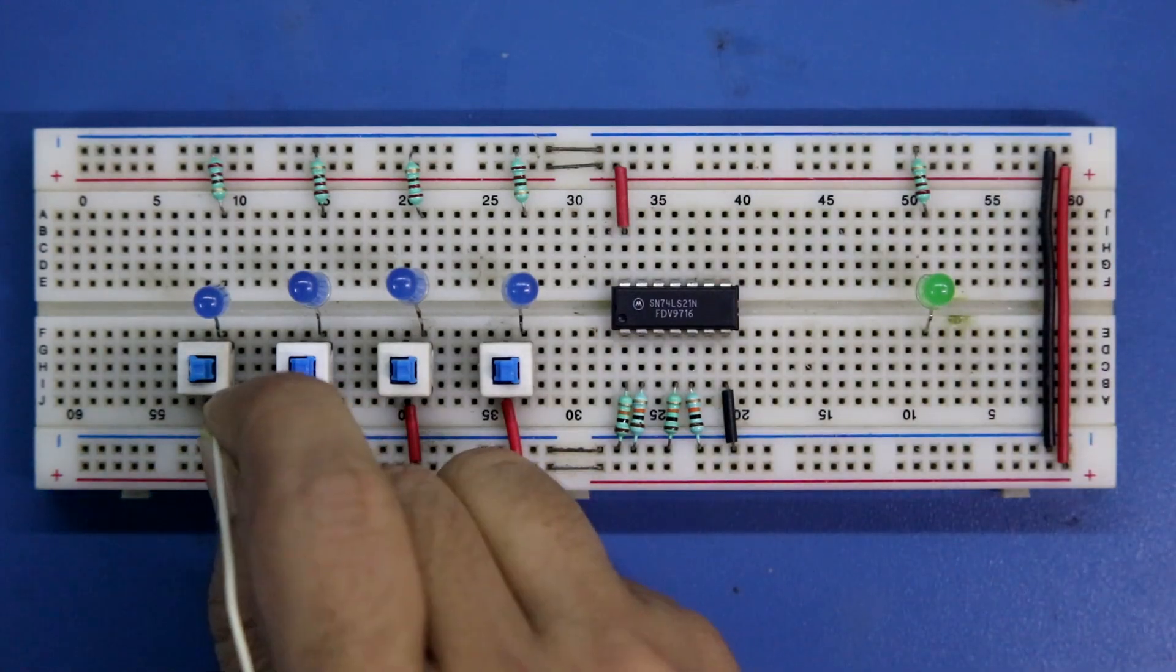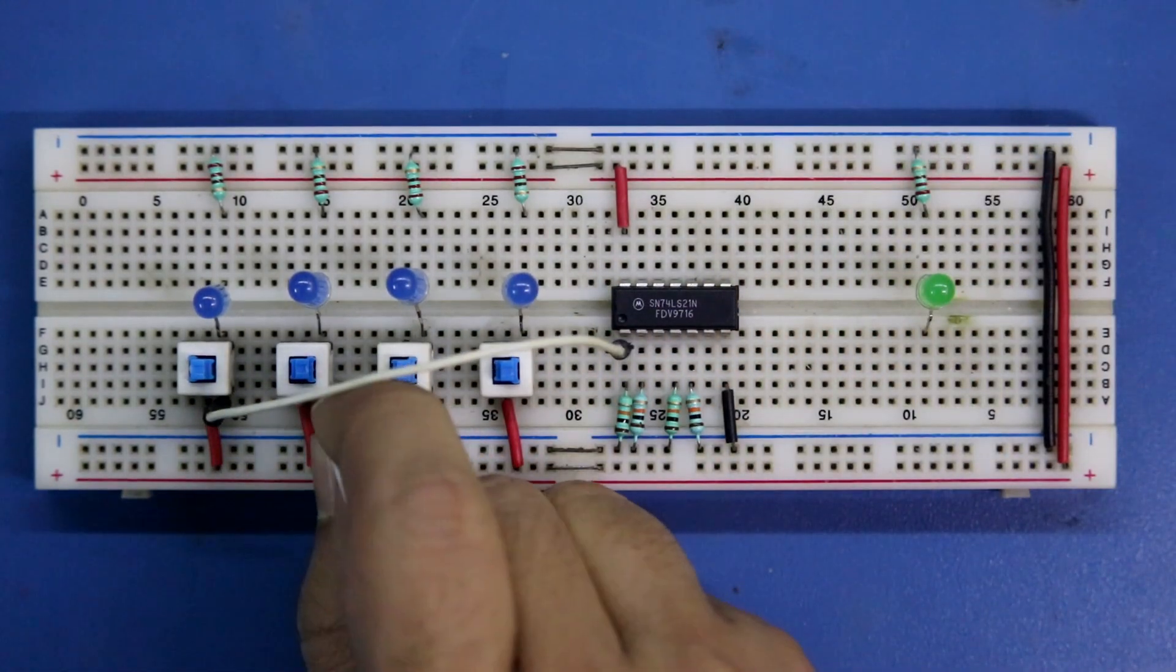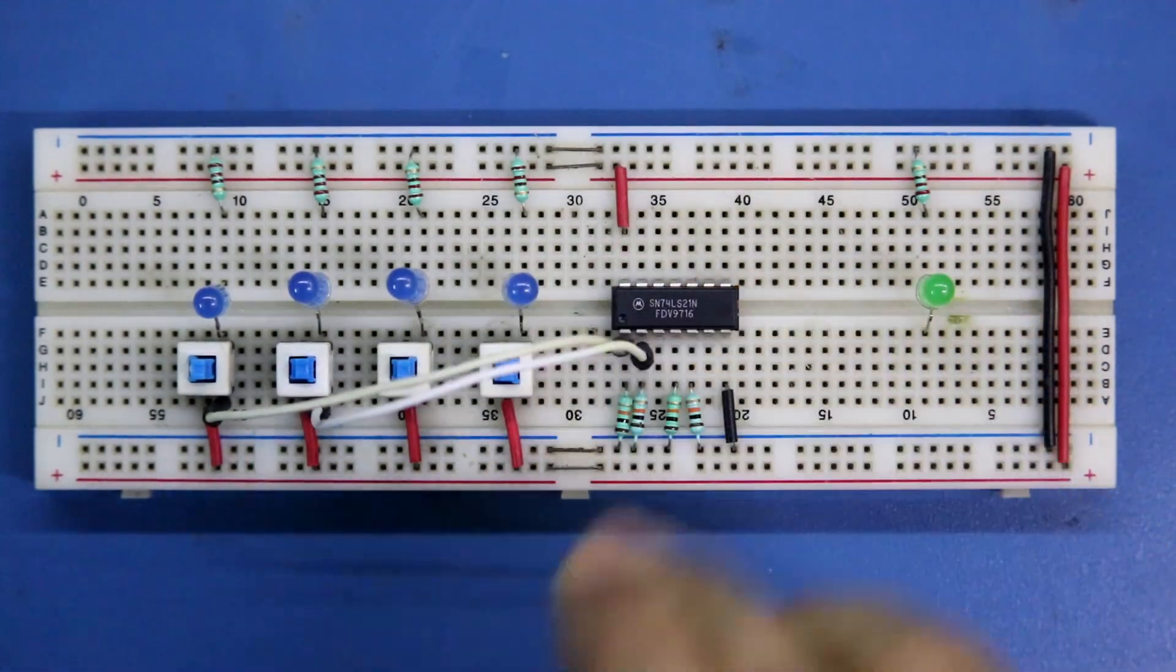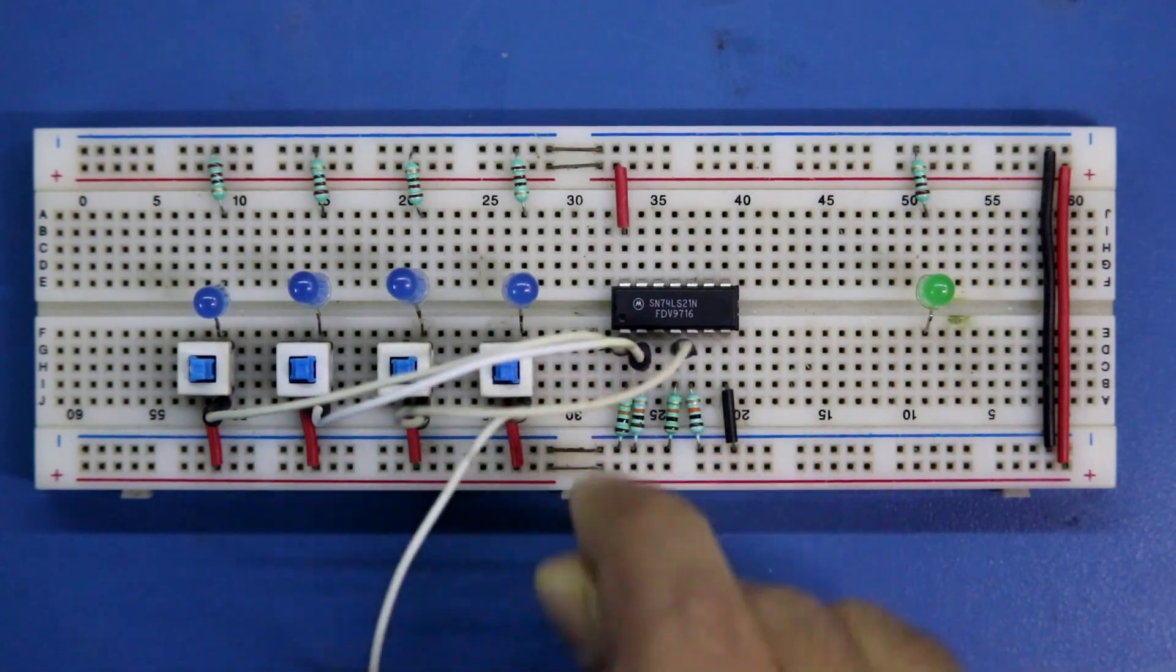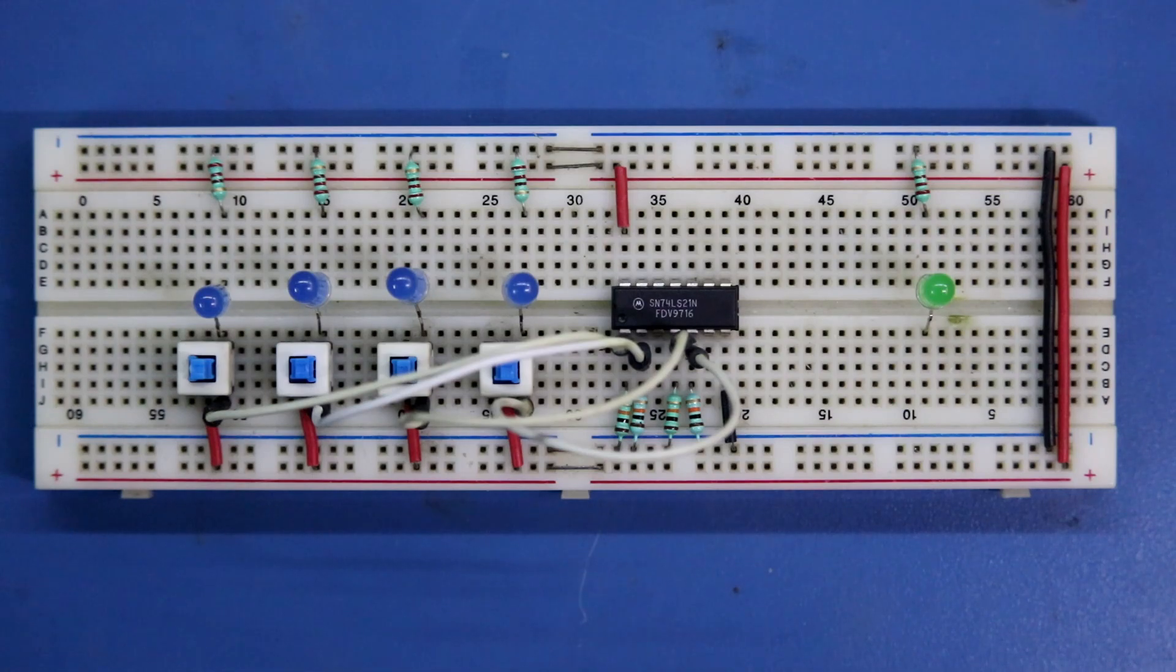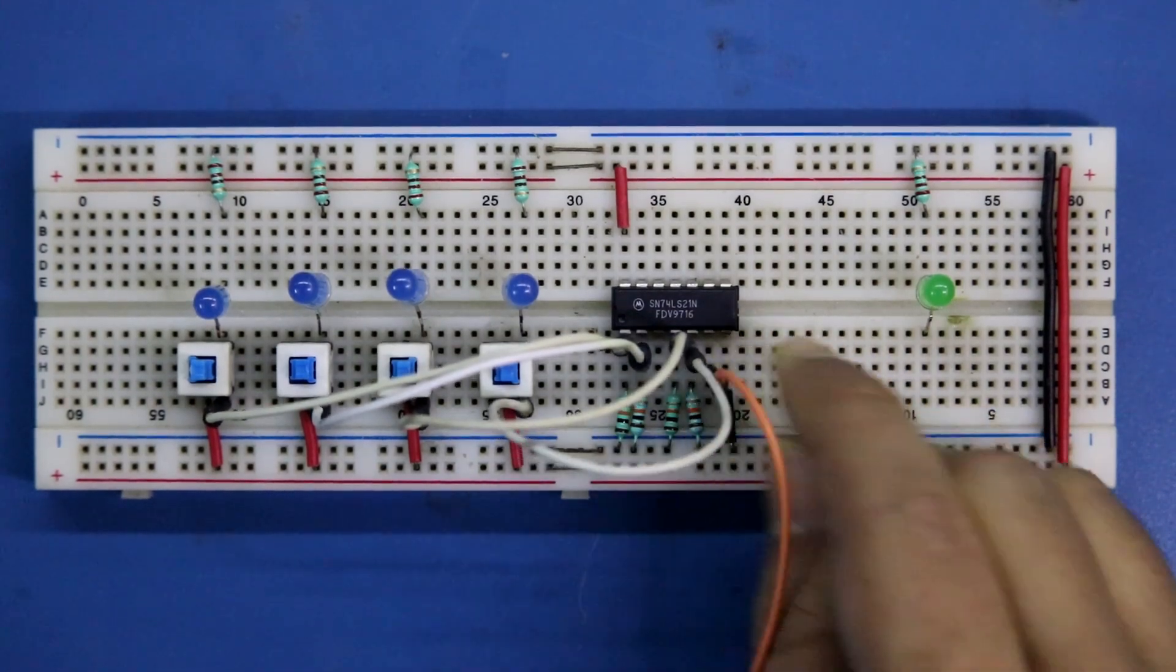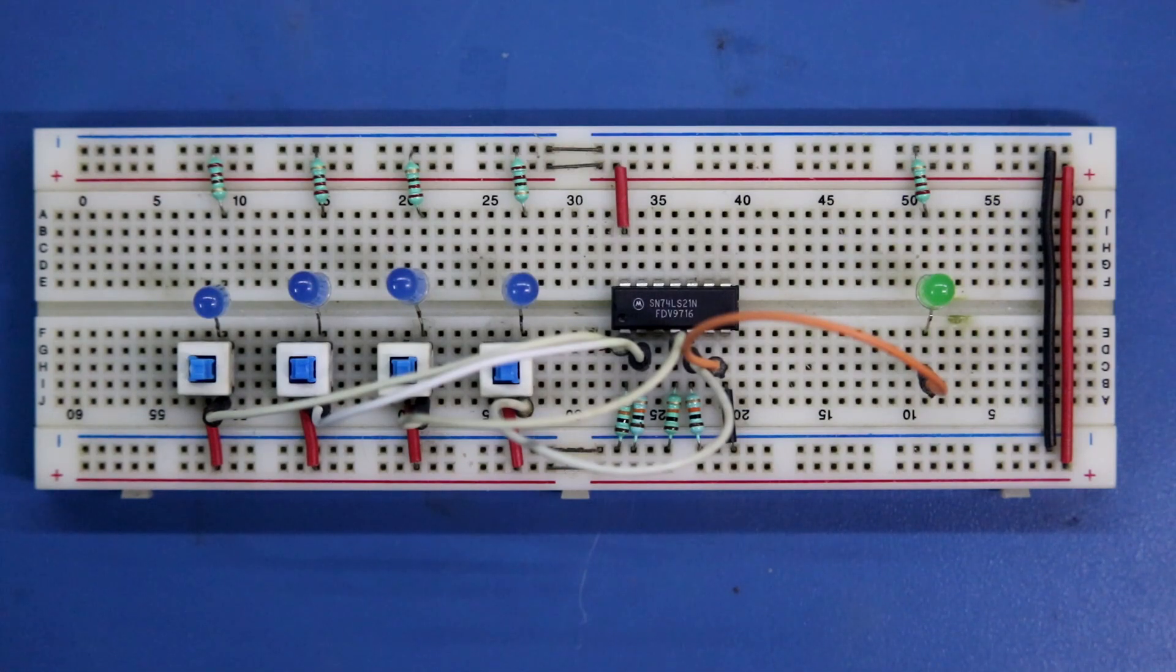Now switch A is connected to pin number one, switch B is connected to pin number two, switch C is connected to pin number four, switch D is connected to pin number five. Pin number six is output so it is connected to LED, the output LED. So this is our connection. Now it's time to connect the power supply.